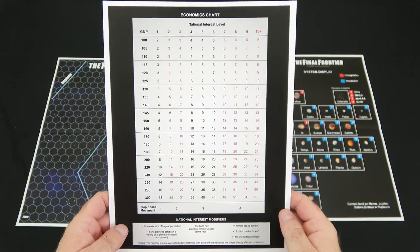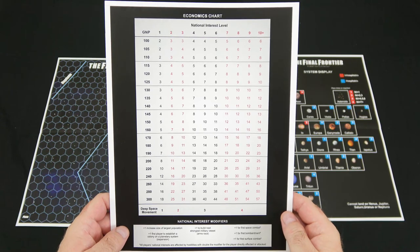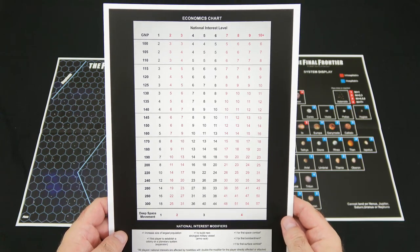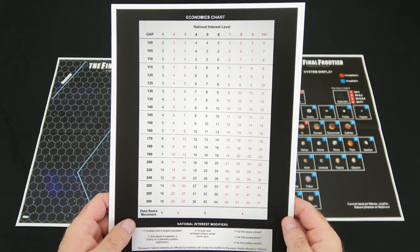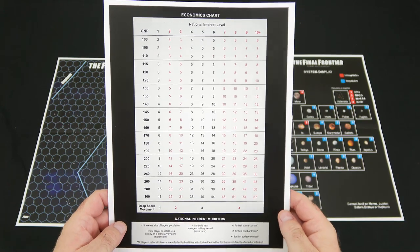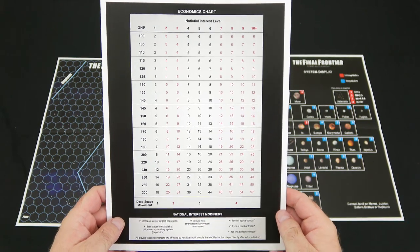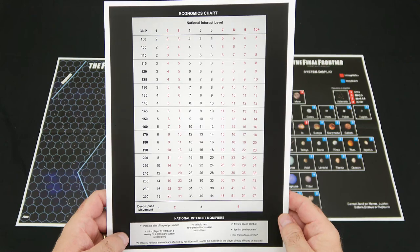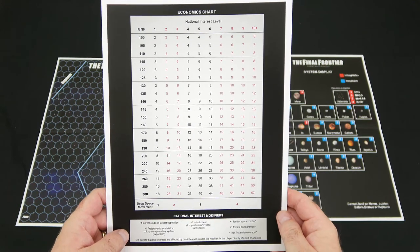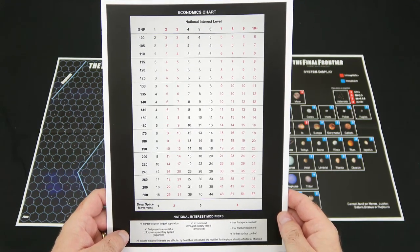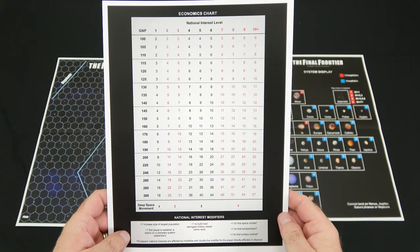Next, we have the economics sheet. This gives you a cross-reference box for your gross national product, your national interest level, and the deep space movement here along the bottom. And then at the very bottom, we have the national interest modifiers, and one of the key parts here is all players' national interests are affected by hostilities, with double the modifier for the player directly affected or attacked.